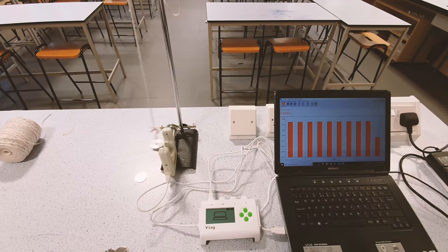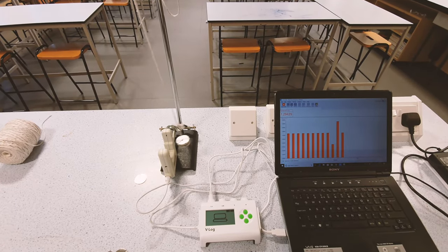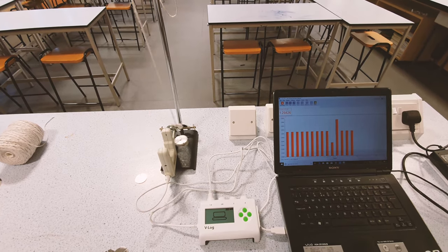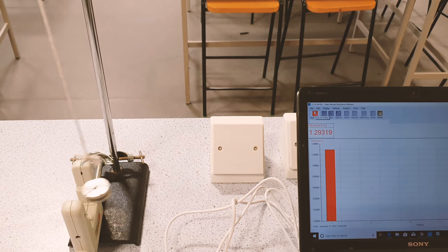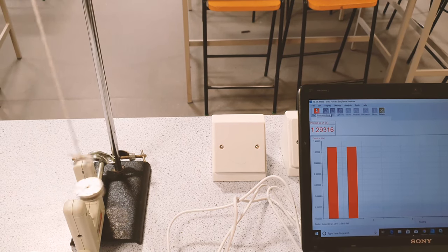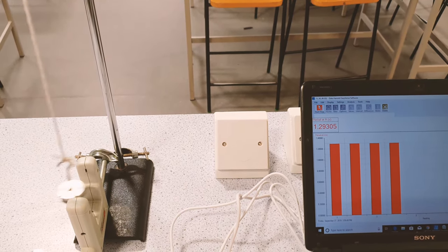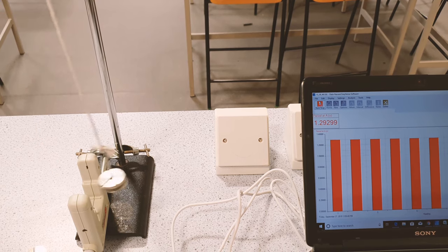And you can ask students questions like, well, what's happening to the time period as the amplitude goes down? And most of the time they're going to say, oh look, it does actually decrease ever so slightly each time. But in fact, that's because the thing is moving slower rather than an actual change in the time period.